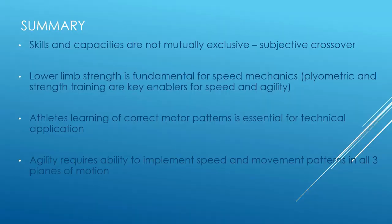To summarize, skills and capacities are not mutually exclusive; there is a correlation between the two and the degree of crossover can be subjective. Lower limb strength is fundamental for speed mechanics, and plyometric and strength training are key enablers for speed and agility. An athlete's learning of correct motor patterns is essential for technical replication, and this is an area where there is particular correlation between what constitutes a skill and a capacity. Agility requires the ability to implement speed and movement patterns in all three planes of motion, which requires a sufficient degree of strength in all three planes.